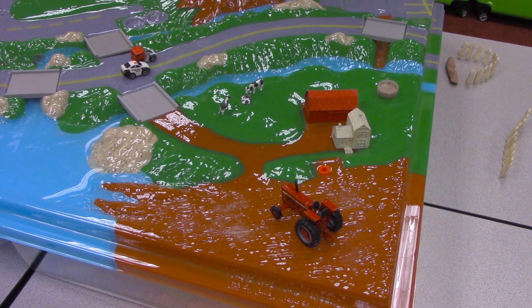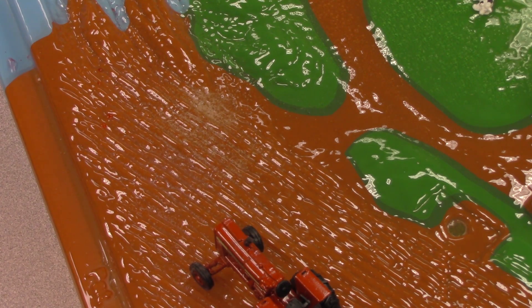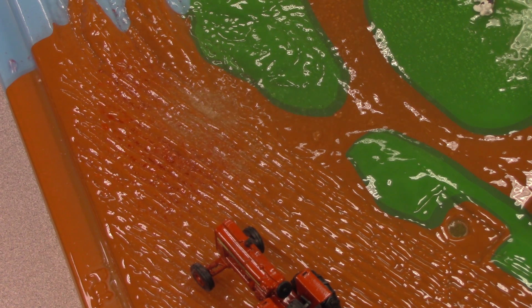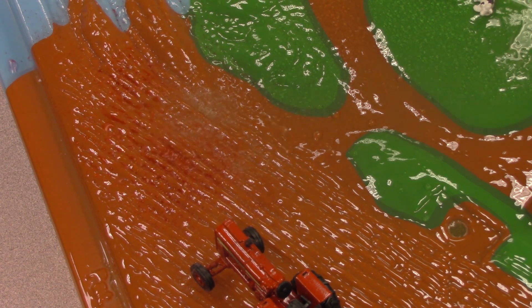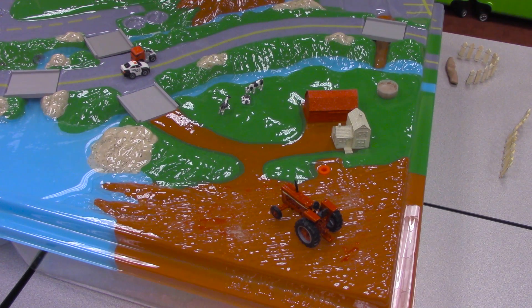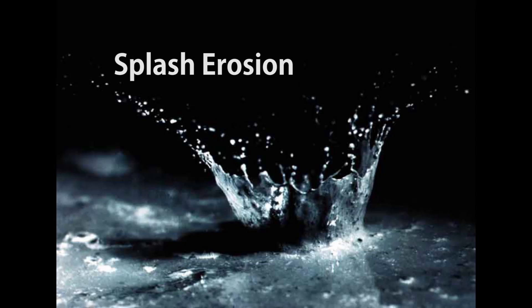The next thing we talk about is what happens when we receive rainfall. We'll spray a little water on the model. When raindrops hit unprotected soil, the first stage of erosion begins. This is called splash erosion. As you can see, the force of a raindrop causes soil to be dislodged where it then is able to move more easily.